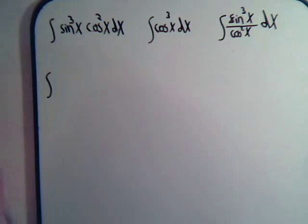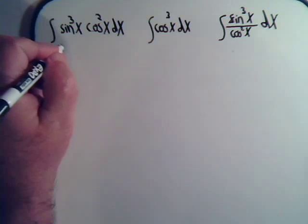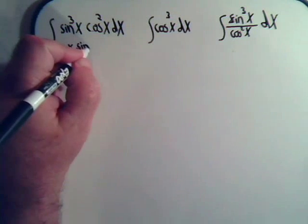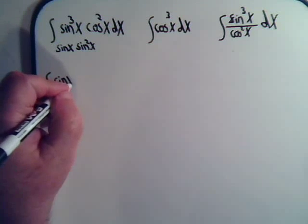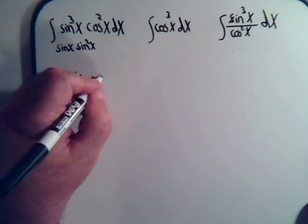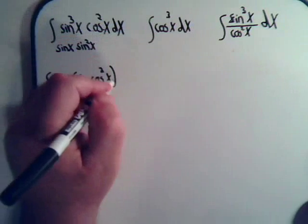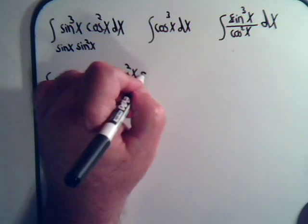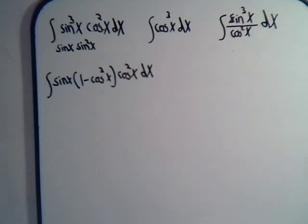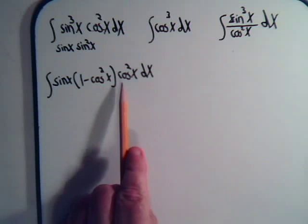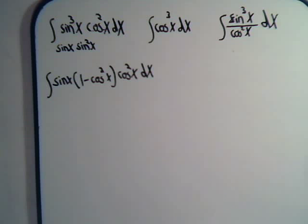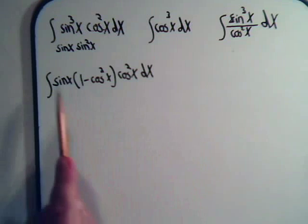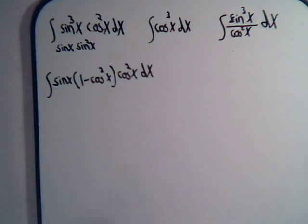We have sine cubed of x times cosine squared of x. If we think of this as sine of x times sine squared of x, then we can rewrite the integral as sine of x times (1 minus cosine squared of x), multiplied by cosine squared of x. We can see this is advantageous: if we call u equal to cosine of x, that gives us u squared, and 1 minus u squared. Since du equals minus sine of x dx, rewriting the integral this way sets us up for a u-substitution.